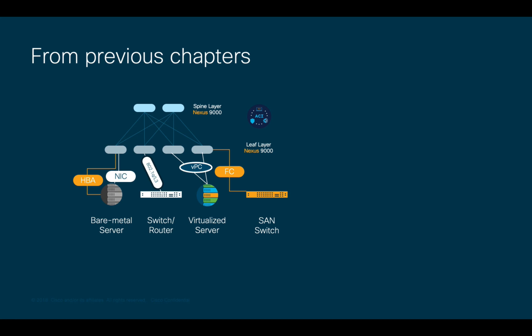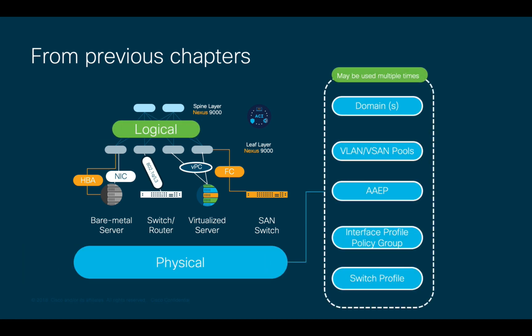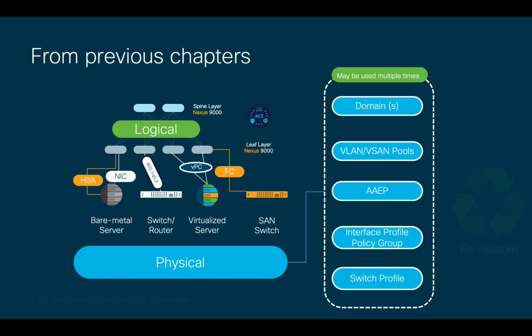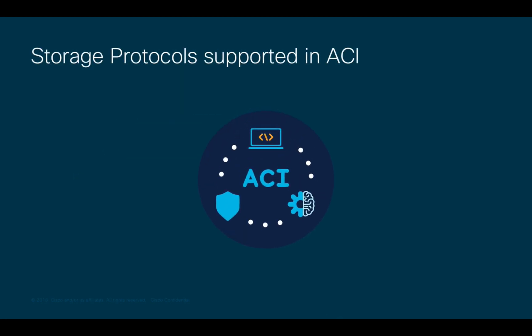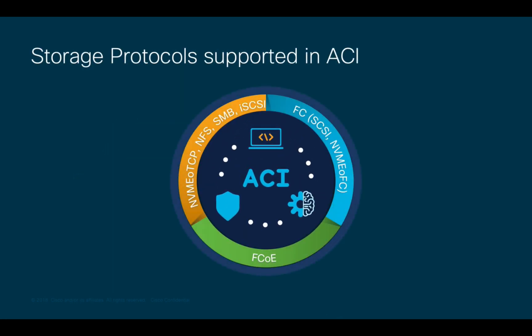In previous chapters we talked about how ACI requires a logical and physical network configuration to provide endpoint connectivity across the fabric, and that we may reuse the same objects such as AEPs, domains, and VLAN pools for multiple connections. We have mainly focused on LAN connections so far, but what about storage protocols? Are they supported on ACI? And the answer is absolutely.